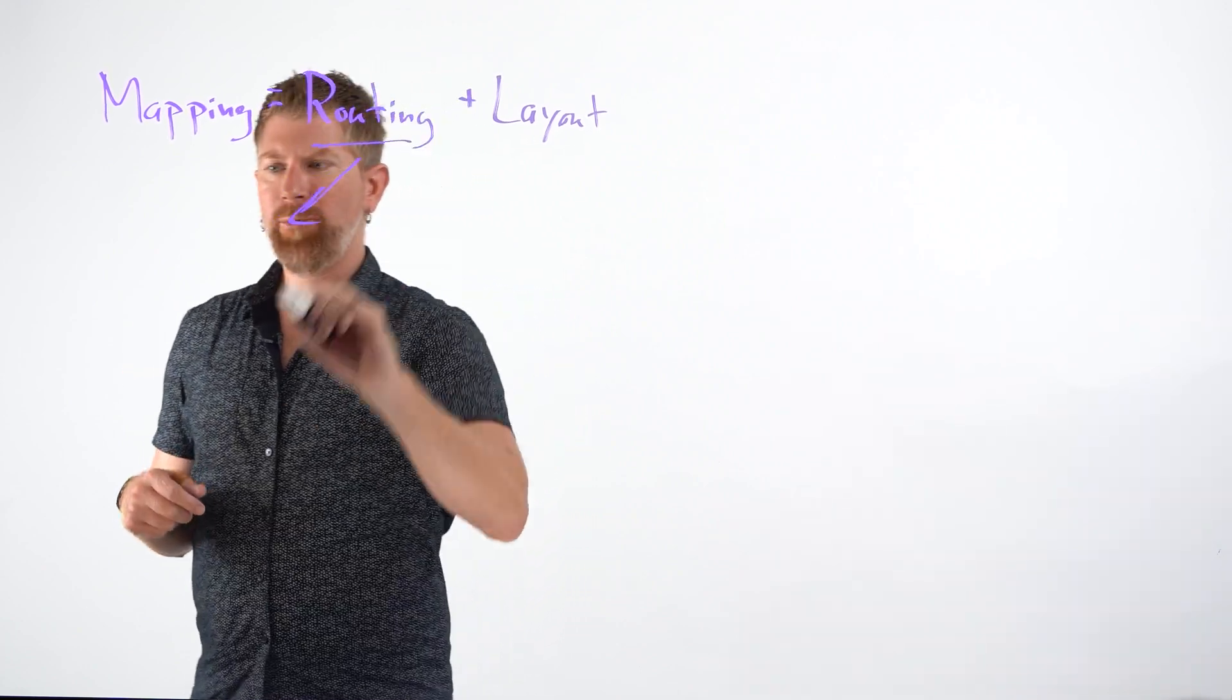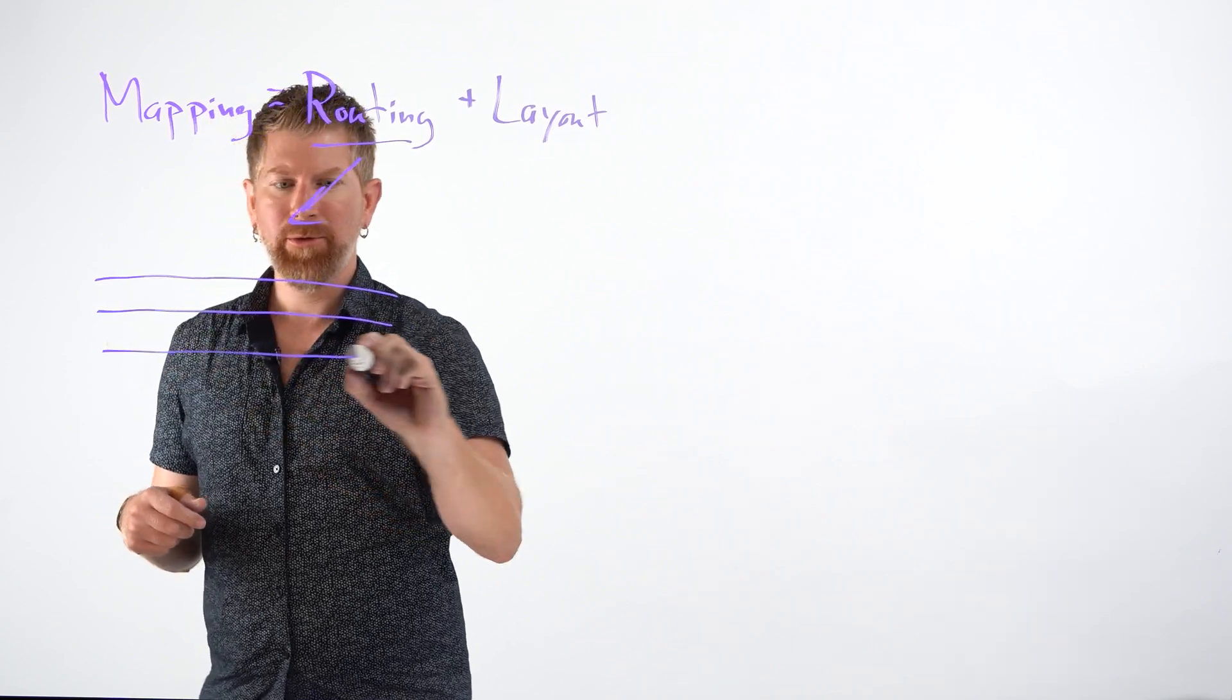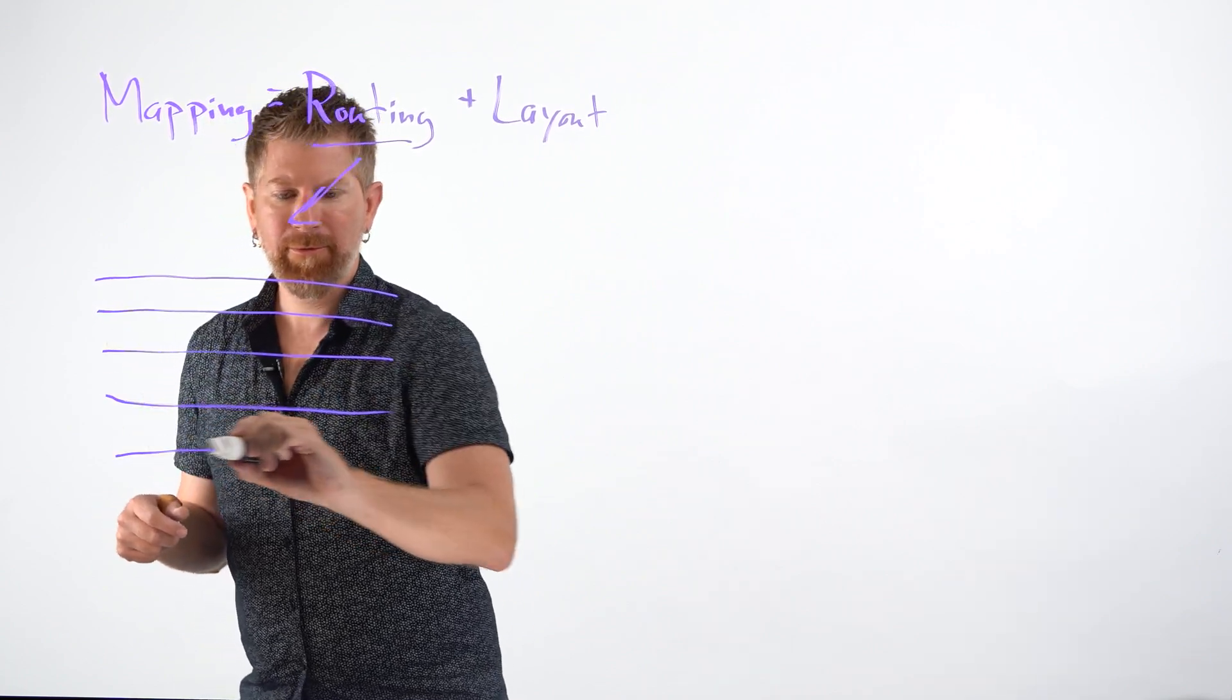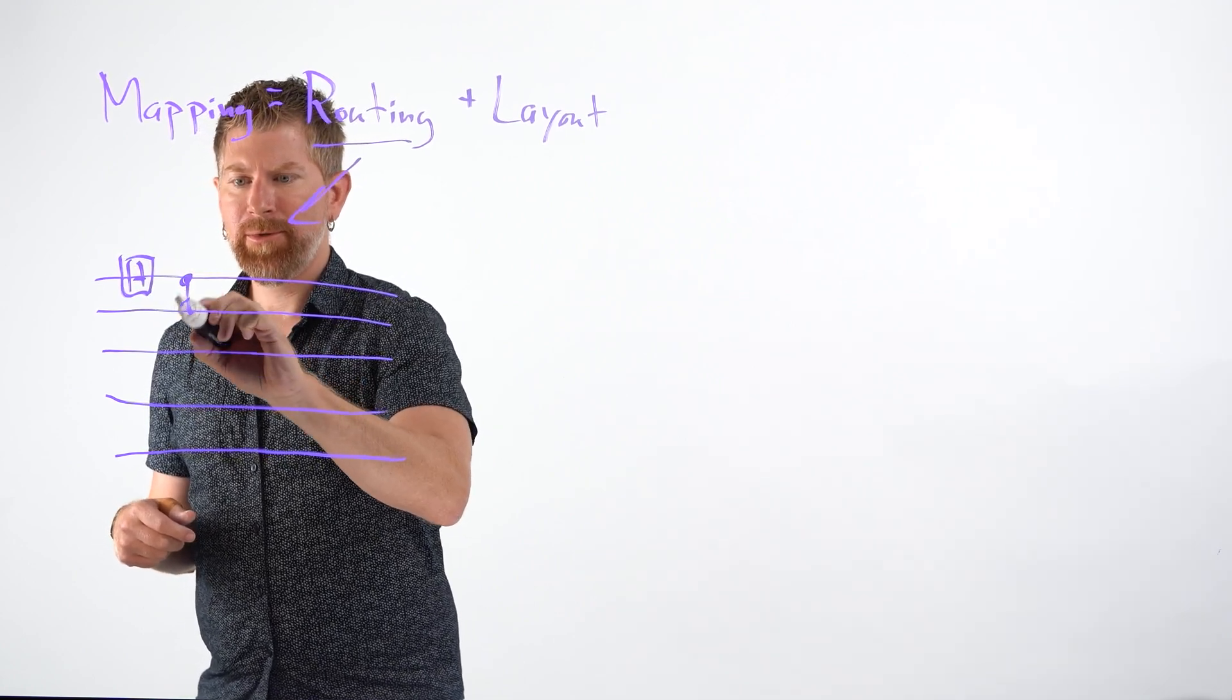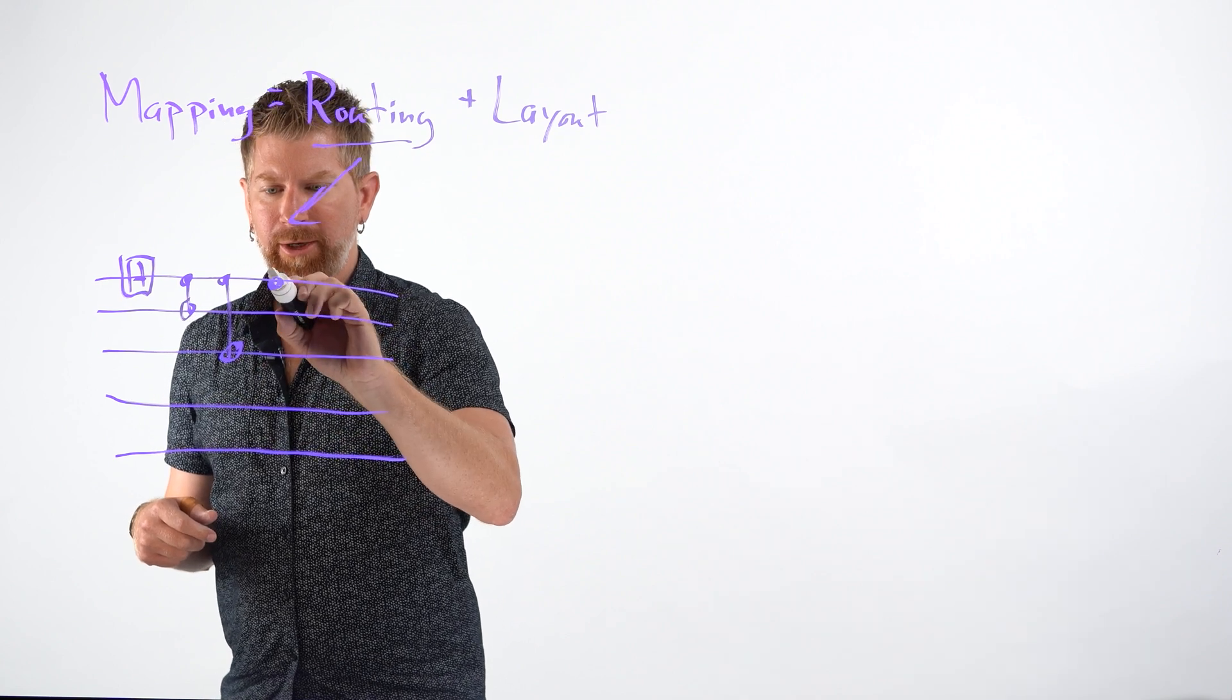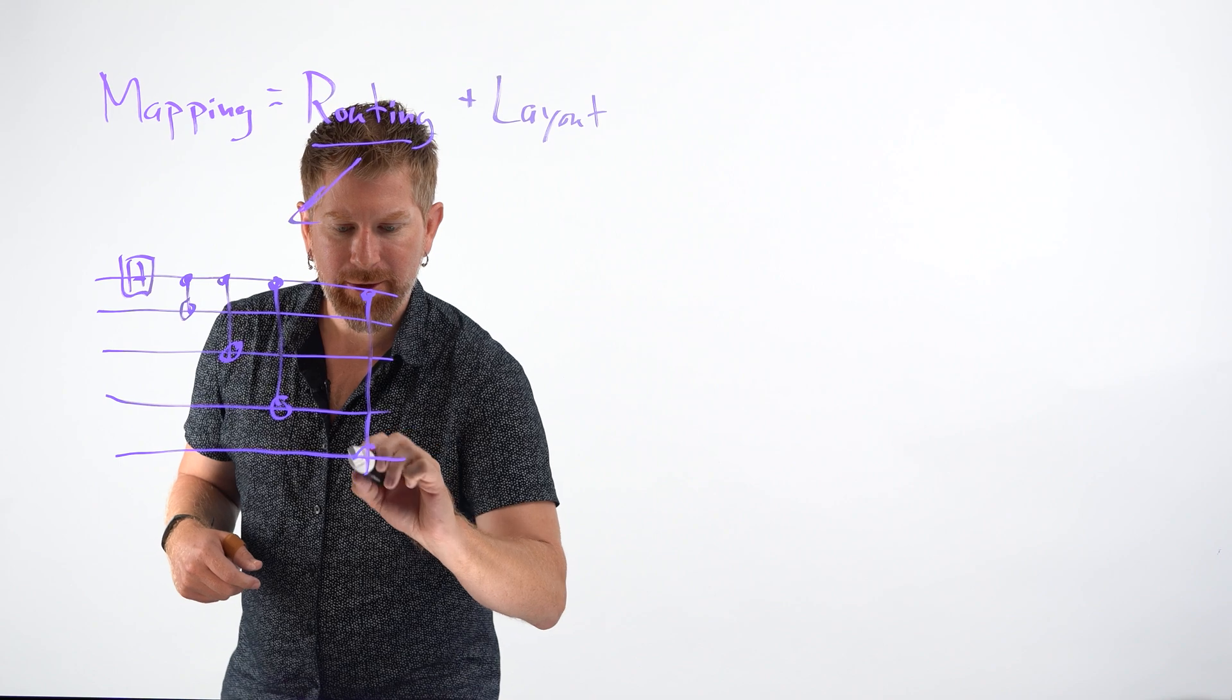In routing before, we had a five qubit circuit: one, two, three, four, five, with a Hadamard on the first qubit, CNOTs connecting each one of these to create a five qubit GHZ state.